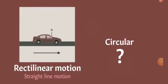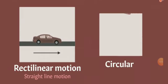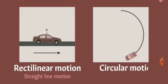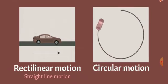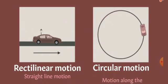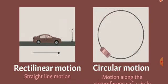Second is circular motion. Circular motion is when the body is moving along the circle, or you can say the motion along the circumference of a circle is known as circular motion. Here the car is moving along a circle, this is circular motion.